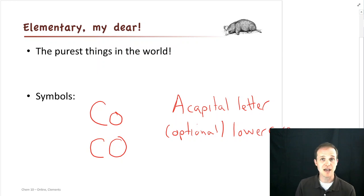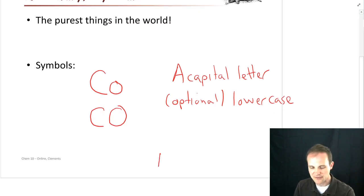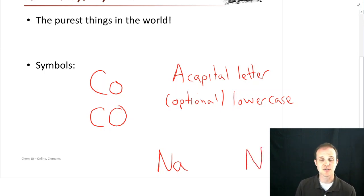It's always a capital letter and then an optional lowercase letter. And by optional, I mean if it's there, you have to use it. If it's not there, you don't use it. That's what I mean by optional. And I'll give you an example of that. If we look at Na, that is sodium as we said on the periodic table. And if we look at N, that's nitrogen. So we'd have to put that A there to be able to distinguish Na sodium from N nitrogen.